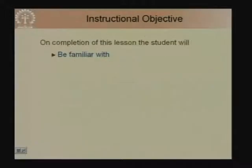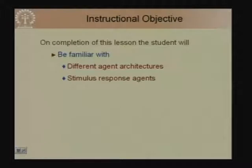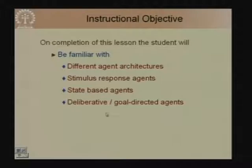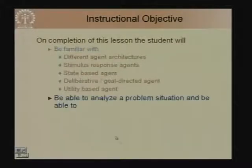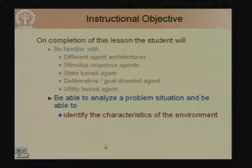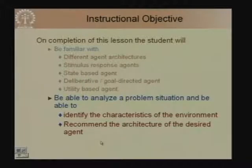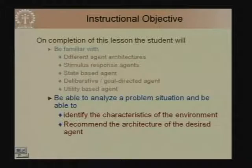We will also look at the concept of bounded rationality, which is the rationality we will deal with. In summary, we will be familiar with different agent architectures including stimulus response agents, state based agents, deliberation and cooperative or goal directed agents, utility based agents, and learning agents. You should also be able to identify, given a problem situation, the characteristics of the environment and recommend what architecture the desired agent should have.